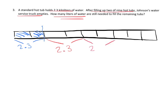These two hot tubs would be 2.3 kiloliters, these two hot tubs would be 2.3 kiloliters, these two hot tubs would be 2.3 kiloliters. And then what is this last one? Well it's going to be half of 2.3, which is 1.15 kiloliters. So now all we have to do is add these up.